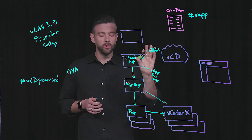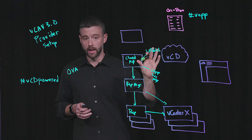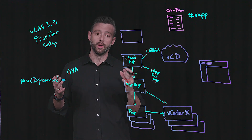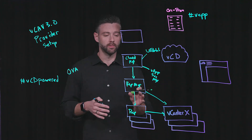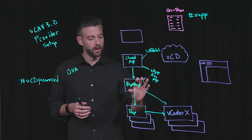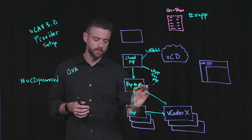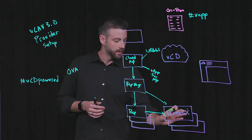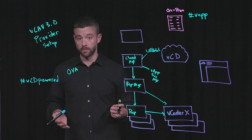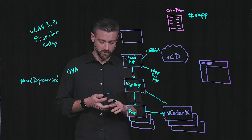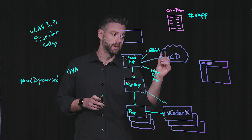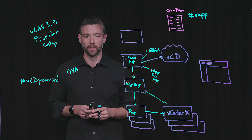The UI portal is where the provider would actually set up any type of policies, but also walk through the initial wizard that would integrate the Replication Manager, the Replicator, connect to the corresponding vCenters, my lookup address, and also provide connectivity to my corresponding vCloud Director environment.